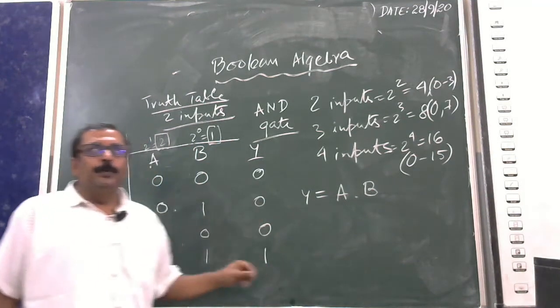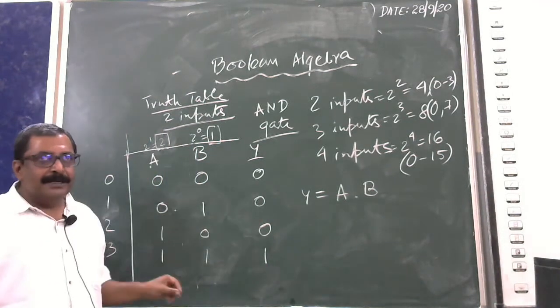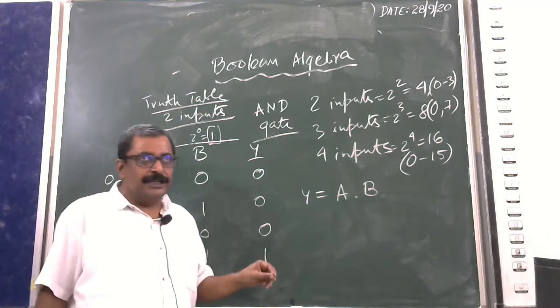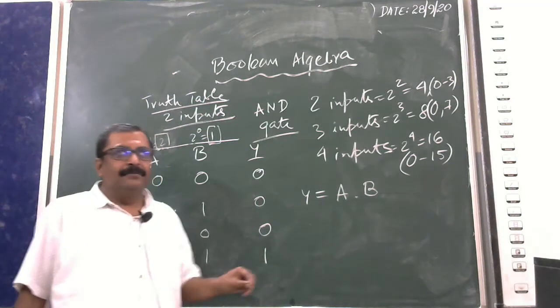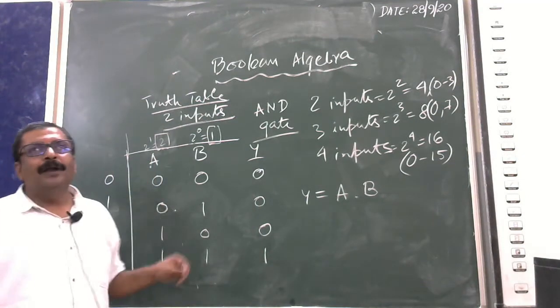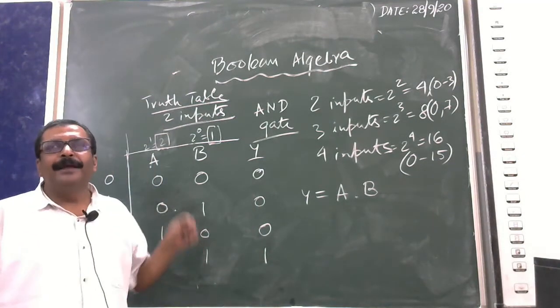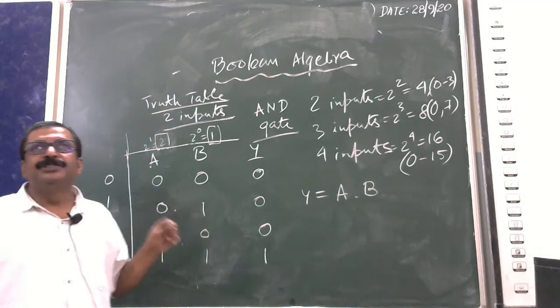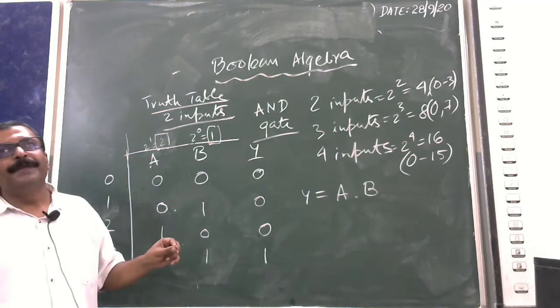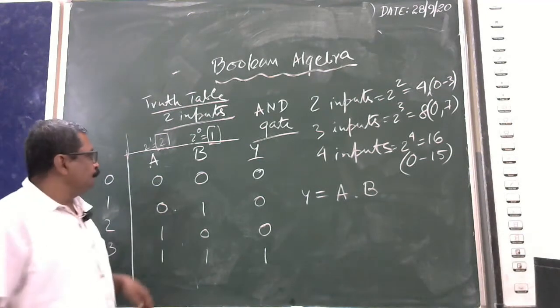To recap: in the AND gate, output depends on the condition that when any one of the inputs is 0, the output will be 0.